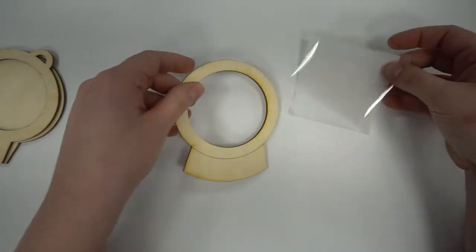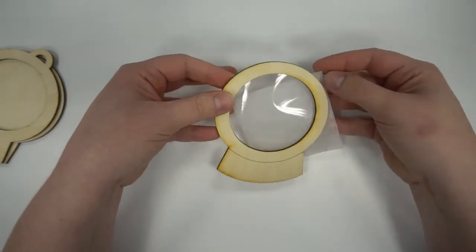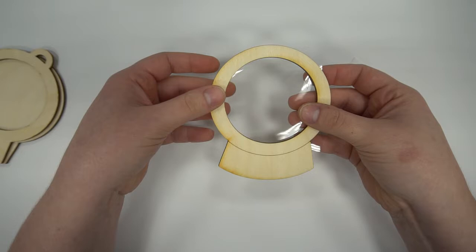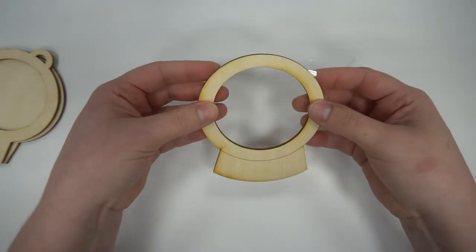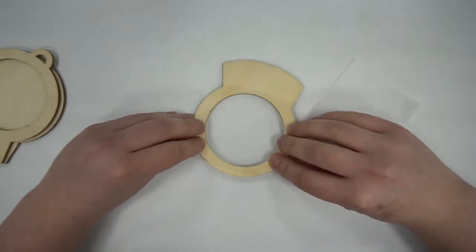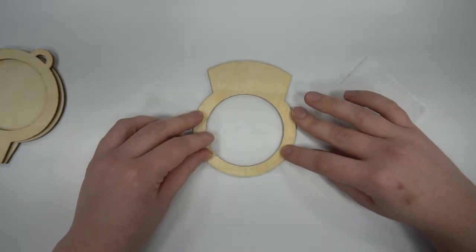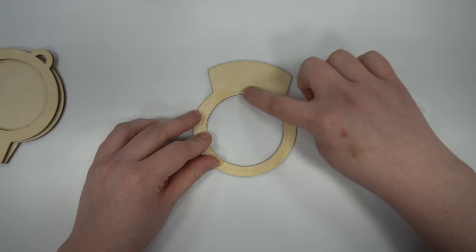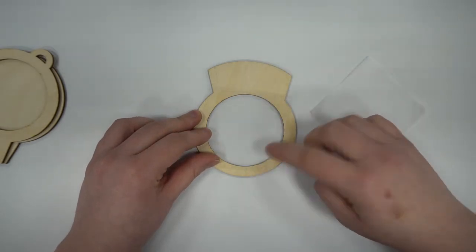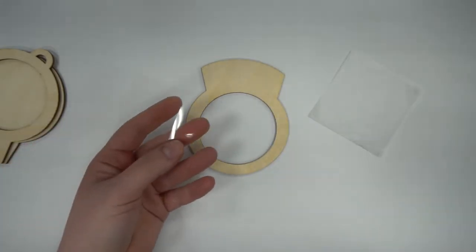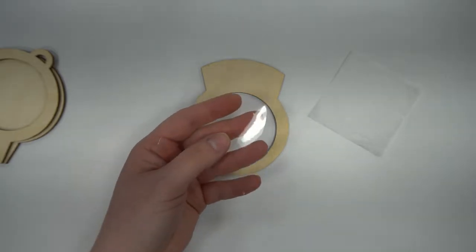While that piece is drying, we're going to take our acetate and cut it down to size. The acetate should fully cover that circle, the opening of the front piece here with just a little bit of a border, about half a centimeter or so to cover up the circle. So we just need to cut the corners off of this square and kind of make it round.